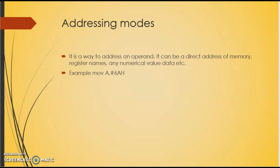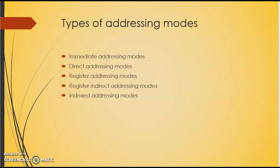Addressing mode can be a direct address of memory, any numerical value, or register name. There are various ways in which instructions are specified in assembly language. We will study five addressing modes: first, immediate addressing mode; second, direct addressing mode; third, register addressing mode; fourth, register indirect addressing mode; and fifth, indexed addressing mode.